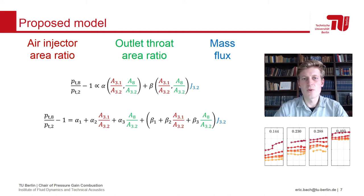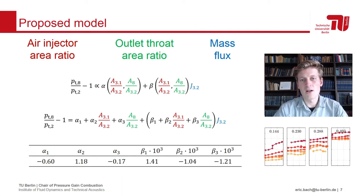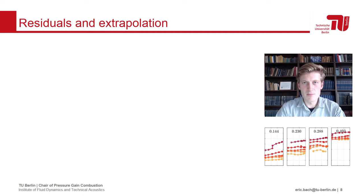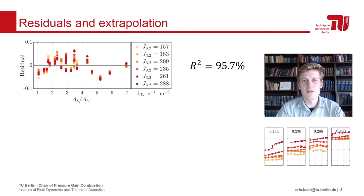For this, we can now use our data set of more than 250 individual points. And these are the resulting coefficients. As a sanity check, we should expect alpha_2 to be positive and alpha_3 to be negative, based on the definition of the associated area ratios. The term that is multiplied with the mass flux on the other hand should be positive, and that is indeed true. We can now check how well our model represents our own data set. The residual is plotted as a function of the relative areas for the investigated mass flux range. We are able to predict the pressure gain value with a ±0.06 accuracy. The R-squared value of this fit is 95.7%.